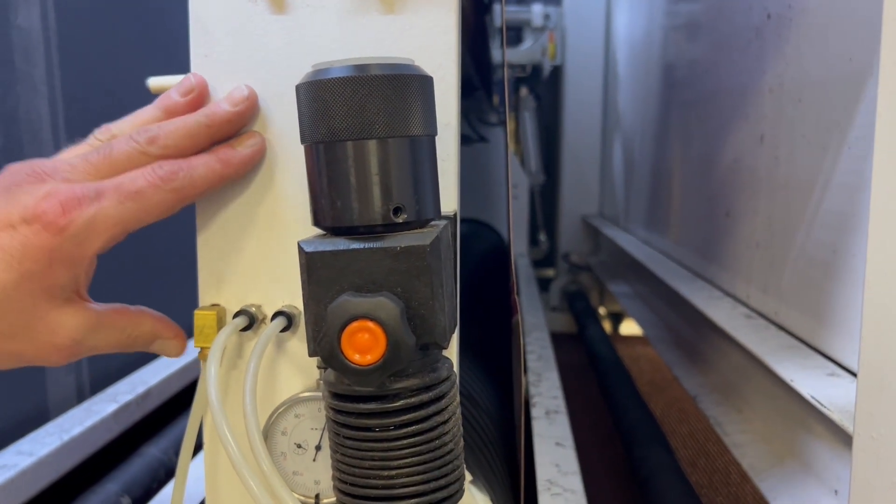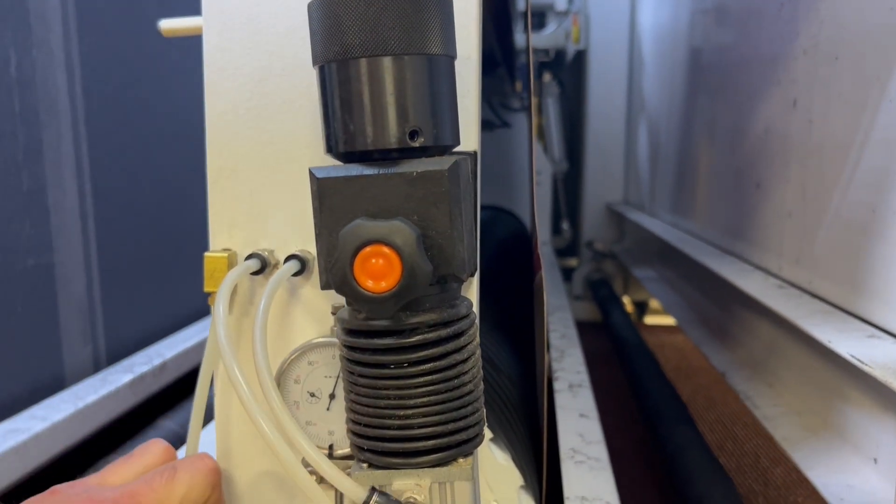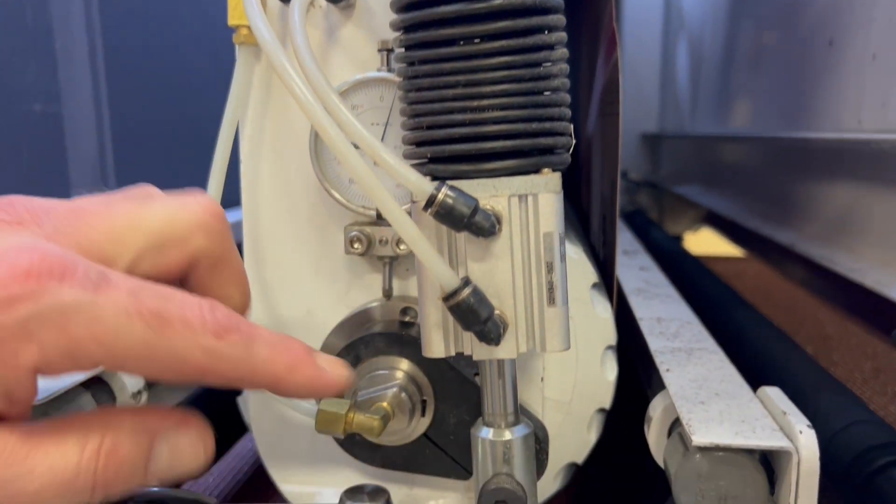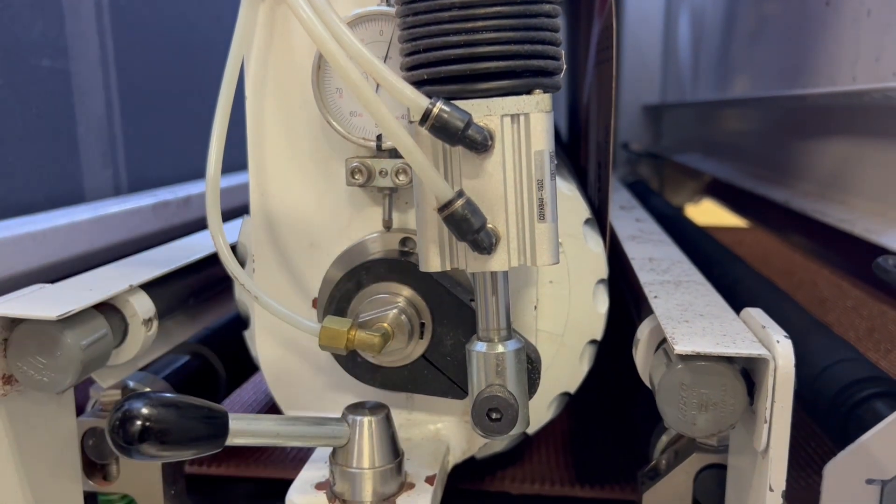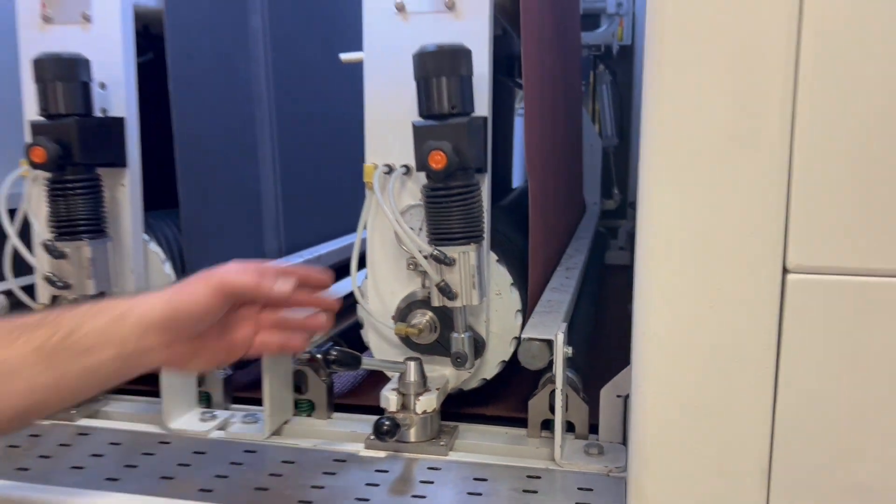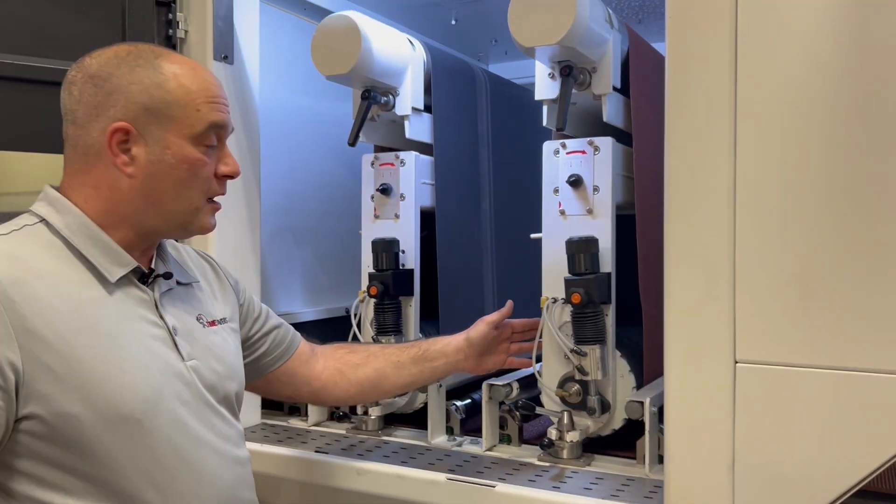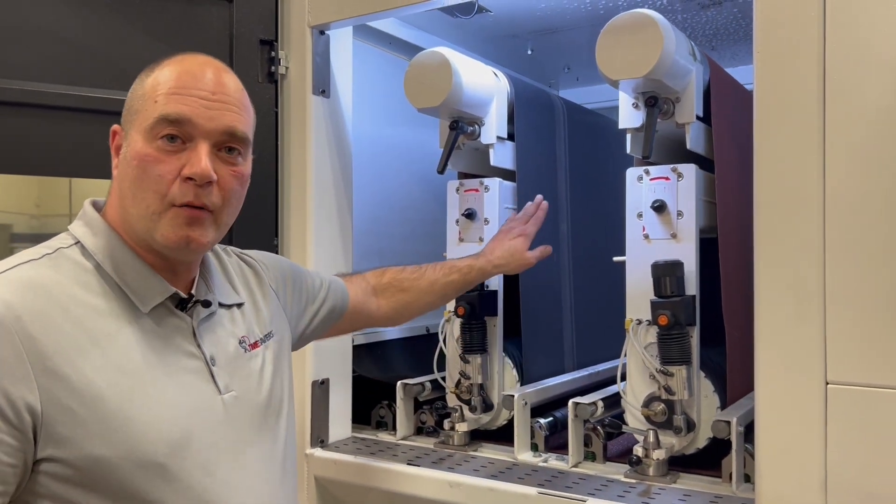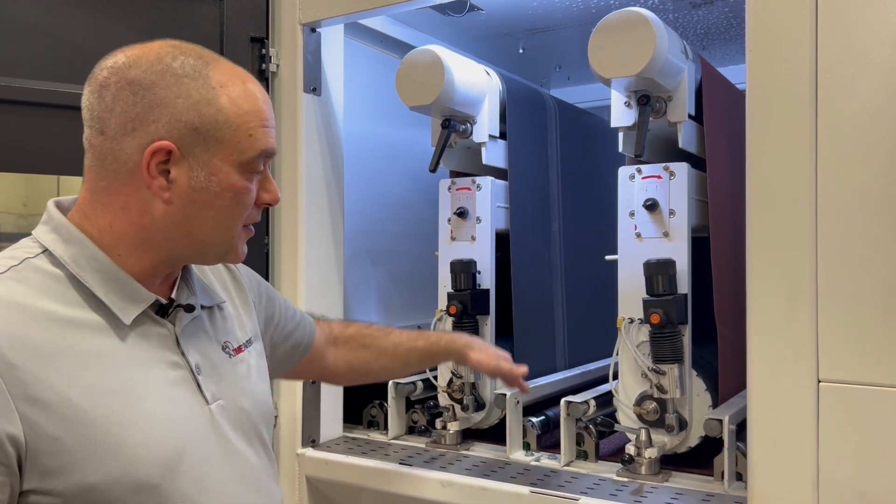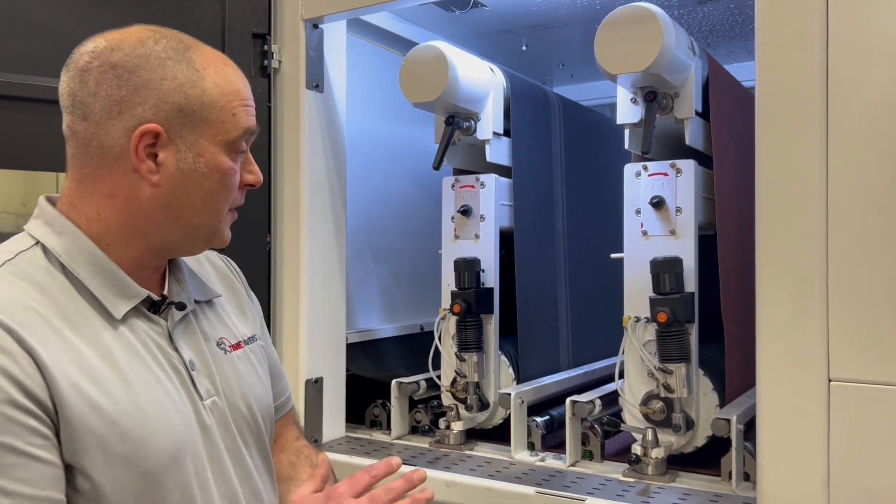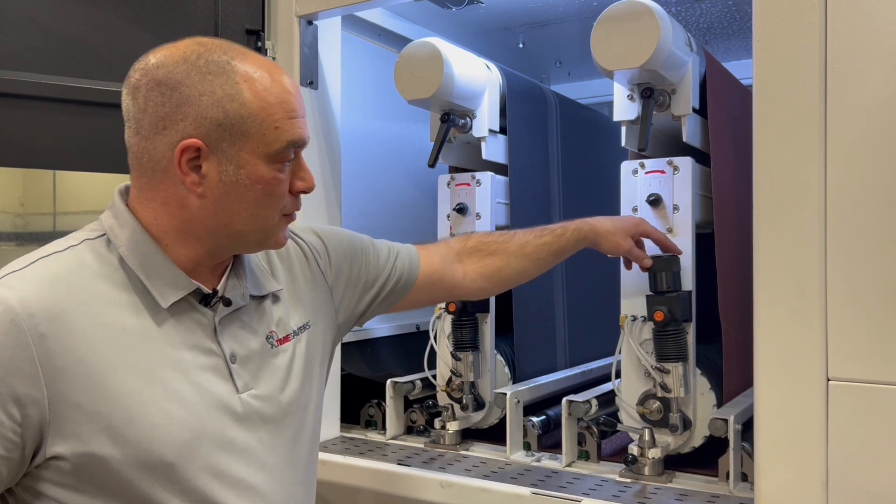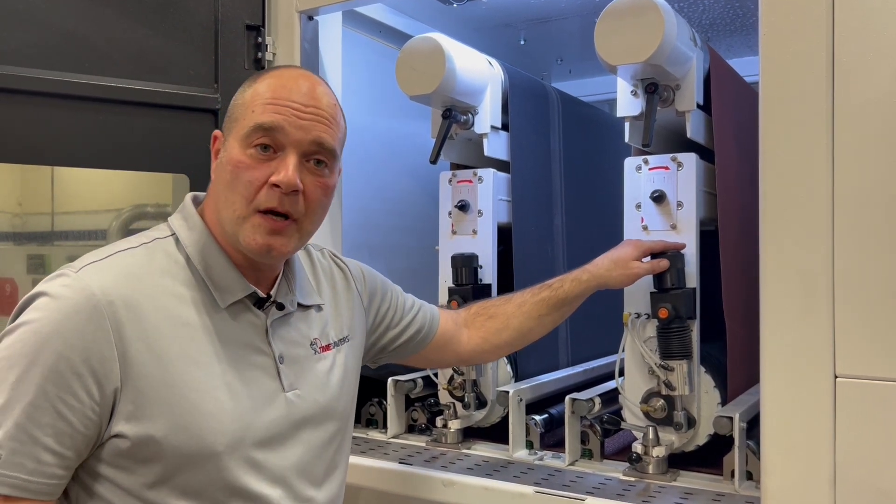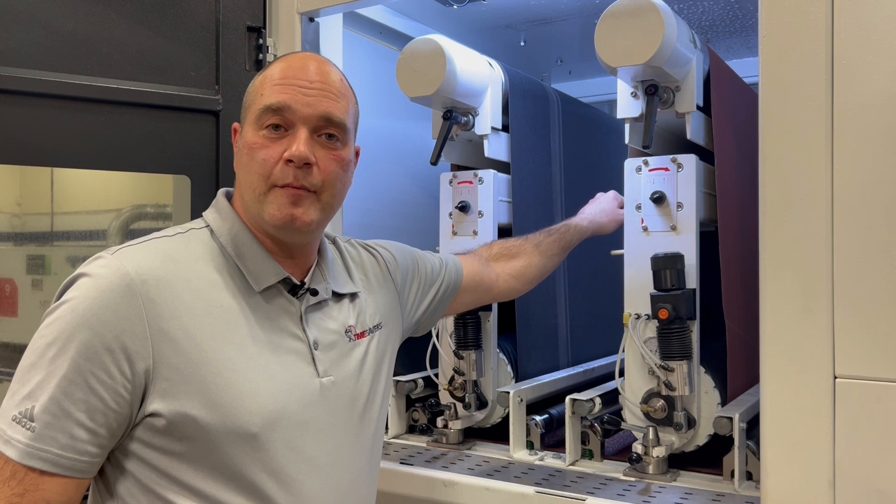Also on this unit here we do have pop-up heads. We do have a dead shaft design so we can actually pop these heads up or down from the control panel. There might be some jobs where you only need one head, you can take the second head up out of the way so you don't have to worry about it, or you can drop it down and put it into the grinding line right away. You do have manual adjustments here to raise and lower the contact drum depending on the thickness of abrasive belt.